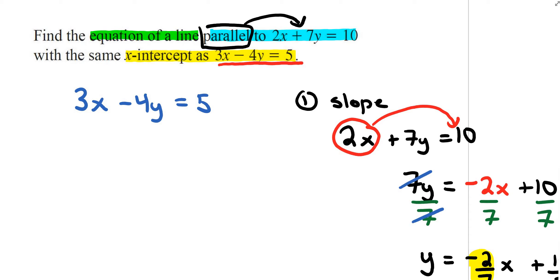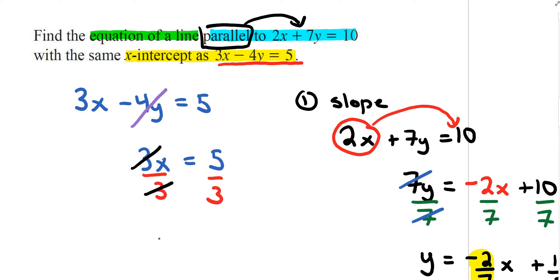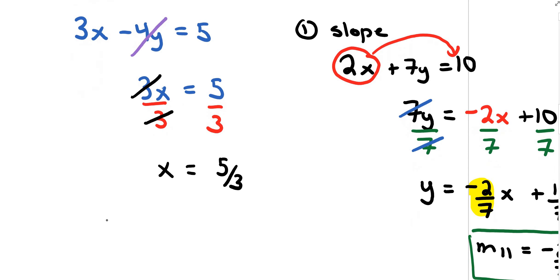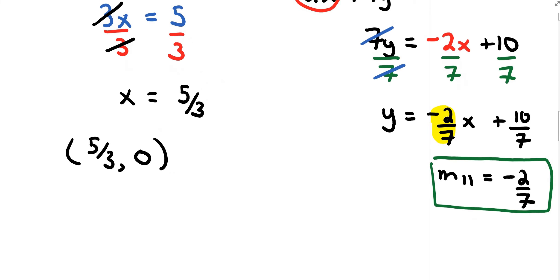Now for the x-intercept of 3x minus 4y equals 5: when dealing with an x-intercept, the y value goes to 0. So 3x equals 5, and dividing both sides by 3 gives x equals 5 over 3. The x-intercept is the point 5 over 3 comma 0.